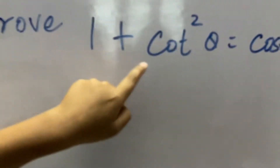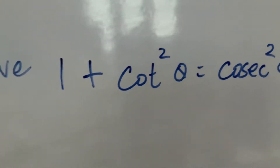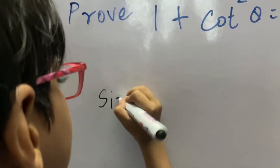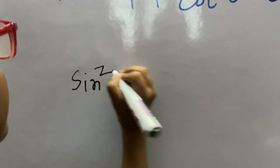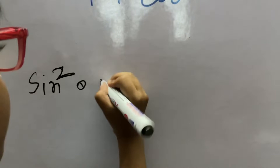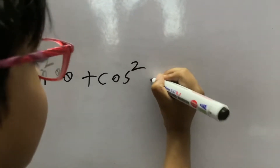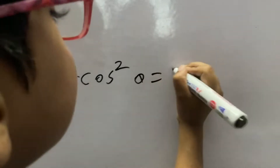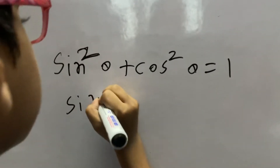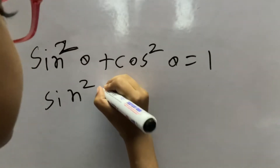Everyone, we are going to prove 1 plus cot square theta equals csc square theta. We all know sin square theta plus cos square theta equals 1. Next, divide all of the terms by sin square theta.